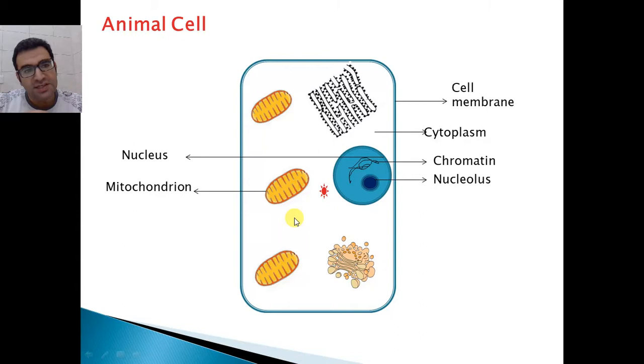We have the Golgi body and the ER, which are similar to each other. ER is the endoplasmic reticulum - the site for protein synthesis or making proteins. The Golgi body is the site of sorting and distribution of those proteins, either outside or inside the cell.